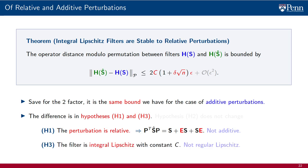And in hypothesis H3, the filter is required to be integral Lipschitz, not regular Lipschitz as is the case of additive perturbations. This is, as you should expect, the most important difference between the theorems for absolute and relative perturbations. Hypothesis H2 does not change: the norm of the error matrix is still epsilon and the eigenvector misalignment constant is still delta.